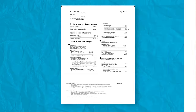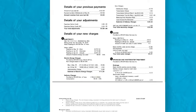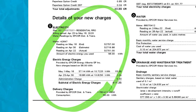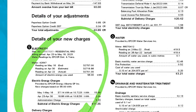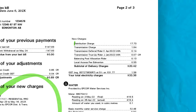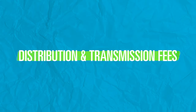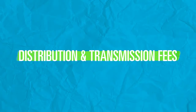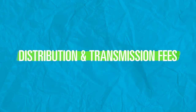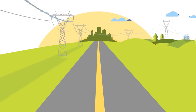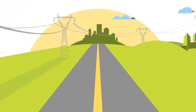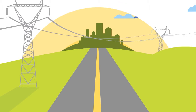The current rate for your electricity can be found under the details of your new charges section of your bill. You'll also see distribution and transmission charges. These amounts reflect the cost of operating and maintaining the electrical infrastructure that provides you with safe and reliable power.